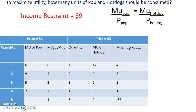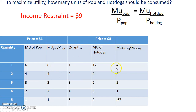Once you've figured out your marginal utilities, you need to find which ones satisfy the marginal utility per dollars equaling one another. I always look at the highest marginal utility per dollar and start from there. In this case, 6 is the highest one. If I look at the hot dog side, there is no 6. Notice that they go down in number because of diminishing marginal utility.